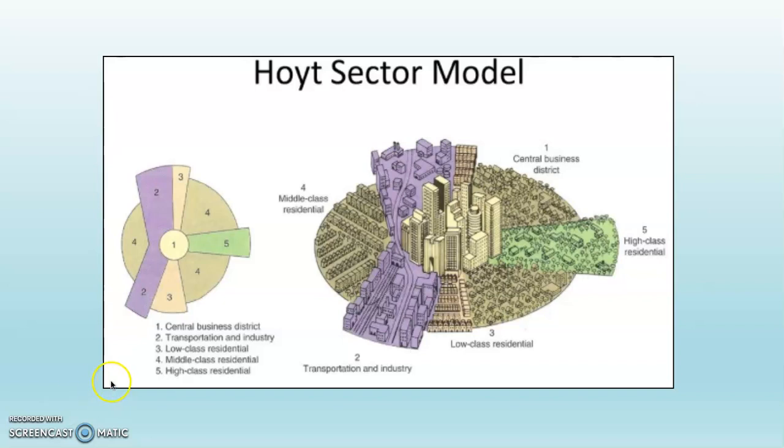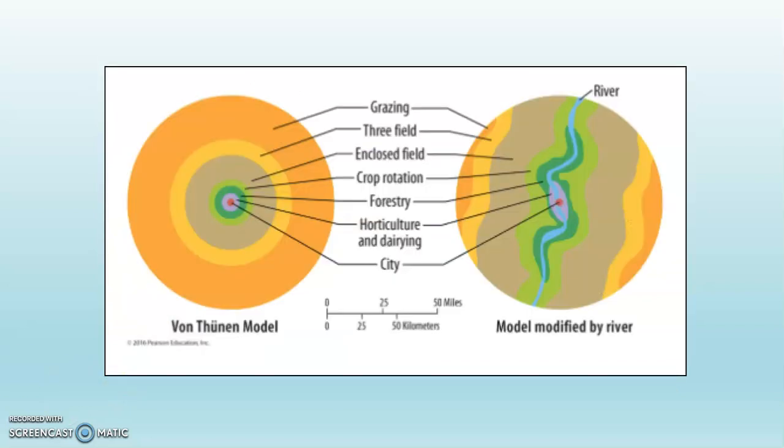If you take a look, you can see that the von Thunen model was modified in a similar way. When you had a transportation route like a river, all of those circles stretch out along the transportation route. In a way, this is an application of that modification to the von Thunen model, only applied here to the concentric zone model.